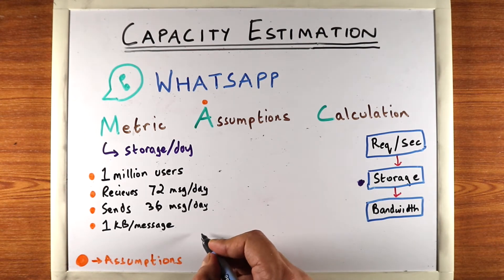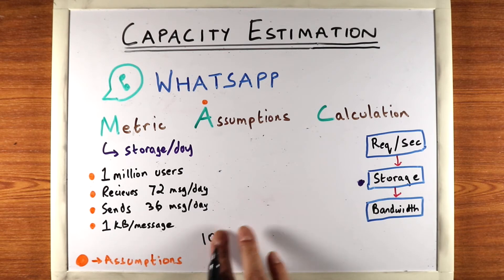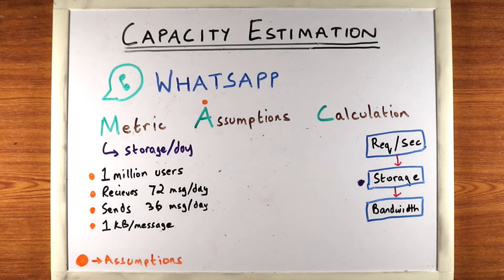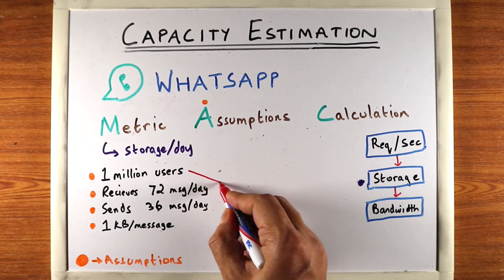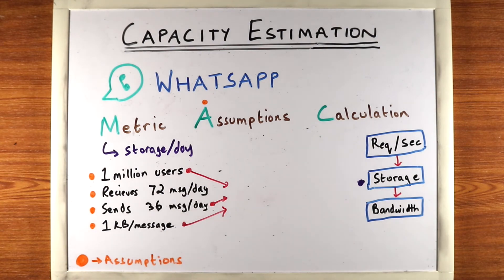One kilobyte means a thousand characters, since each character takes one byte, which is pretty long for a message. But we're also assuming that a message can contain metadata about the sender and which group it's going to, so overall we're saying the message takes one kilobyte. In reality this might be less or more, but we're just making this assumption.